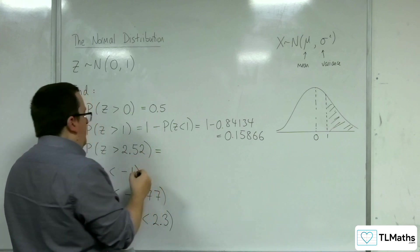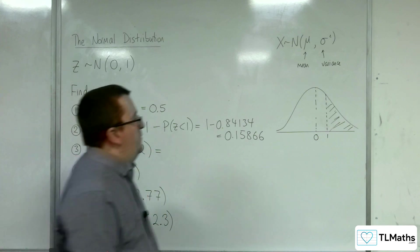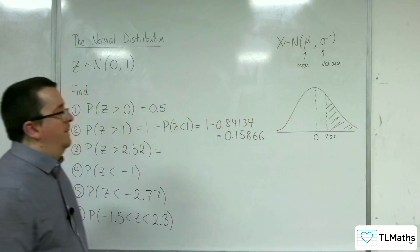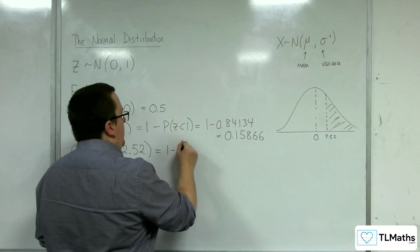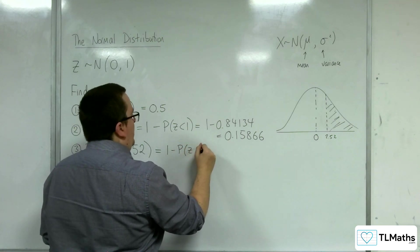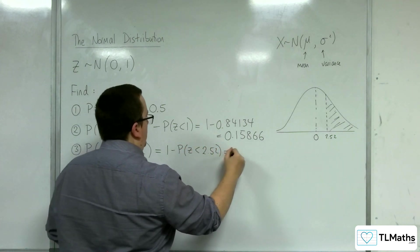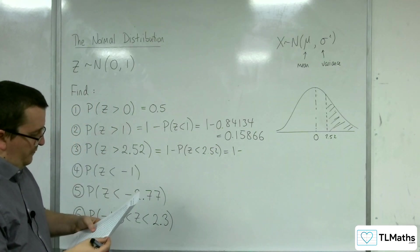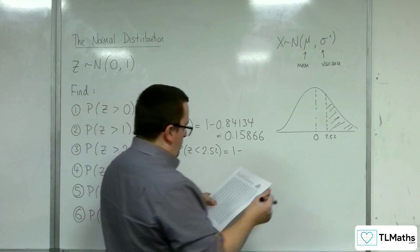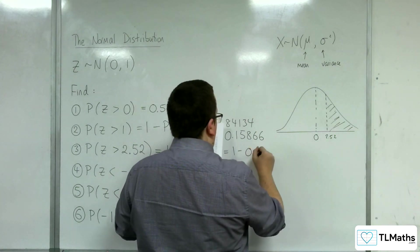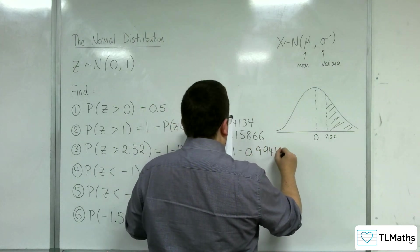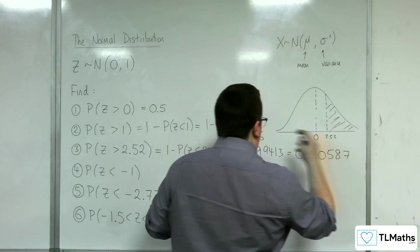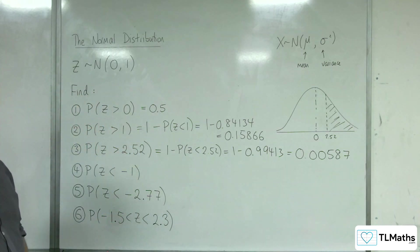So likewise, for the probability of Z being greater than 2.52, for that region I need to do a similar calculation. It'll be 1 take away the probability of Z being less than 2.52. So 2.52 is 0.99413. So 0.00587, and that will be the required probability.